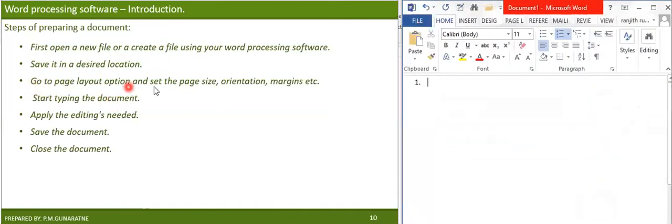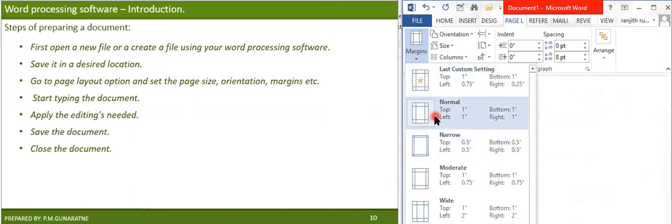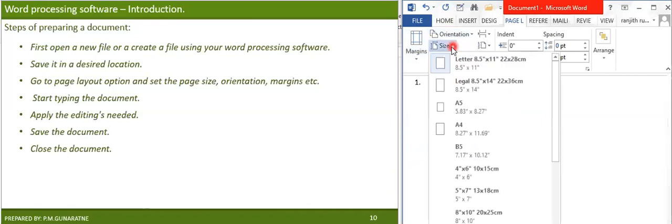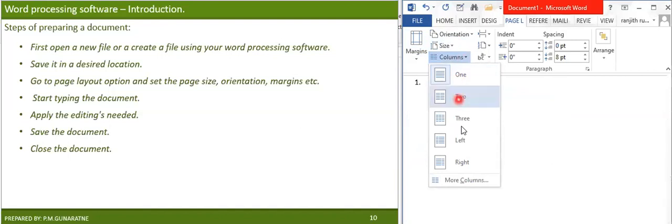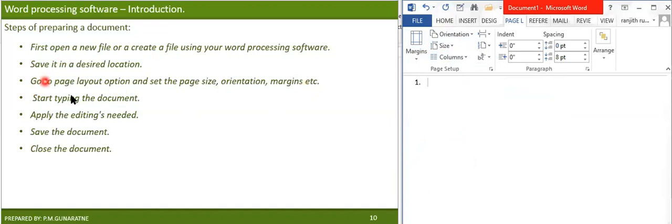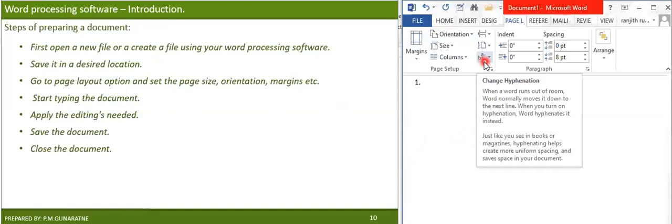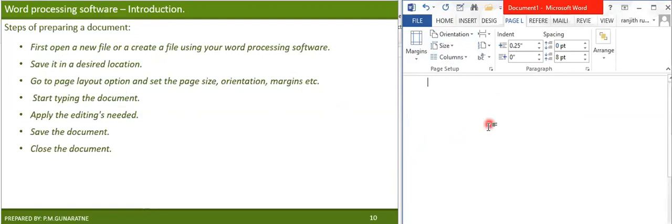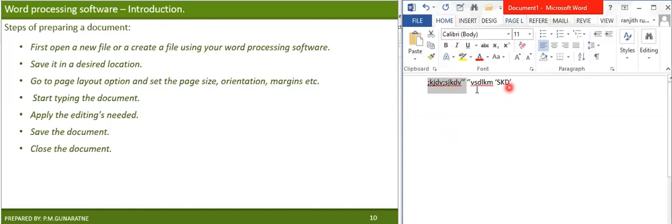After saving, go to the Page Layout tab. There are several options: select the margins, orientation, size (such as A4), and number of columns if needed. After setting the page layout, we start typing. When typing the document, you do not need to apply styles and editing while you are typing — just type whatever you want. After finishing typing, you can then apply all the editing you want from the Home tab, such as bold or italic, by selecting the target object and clicking the icon.